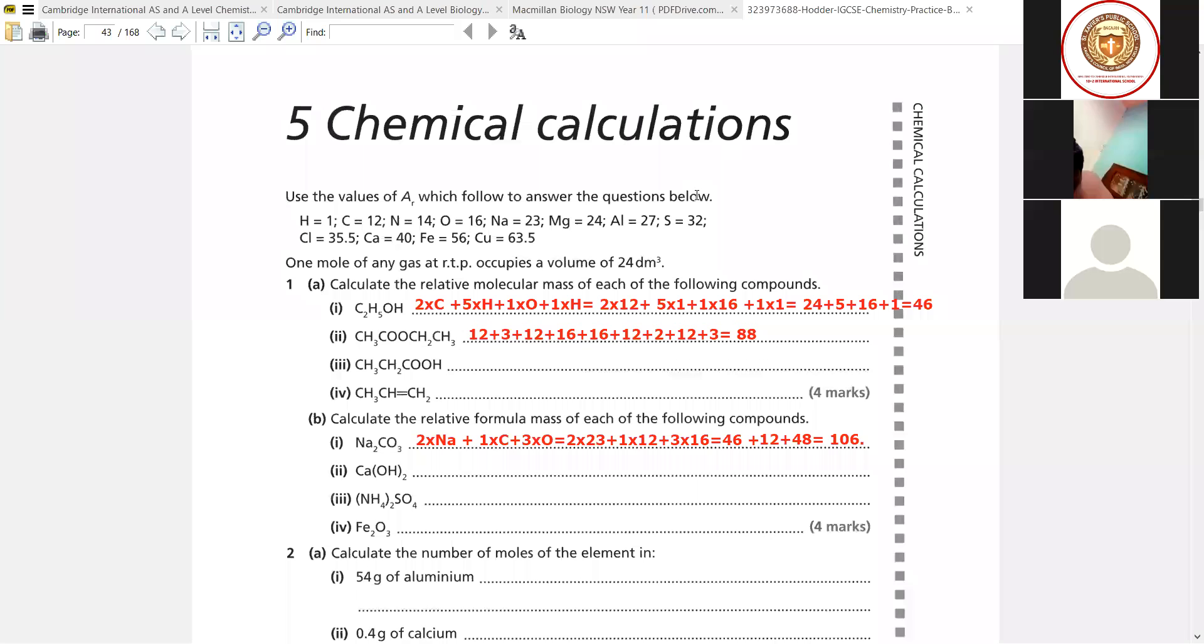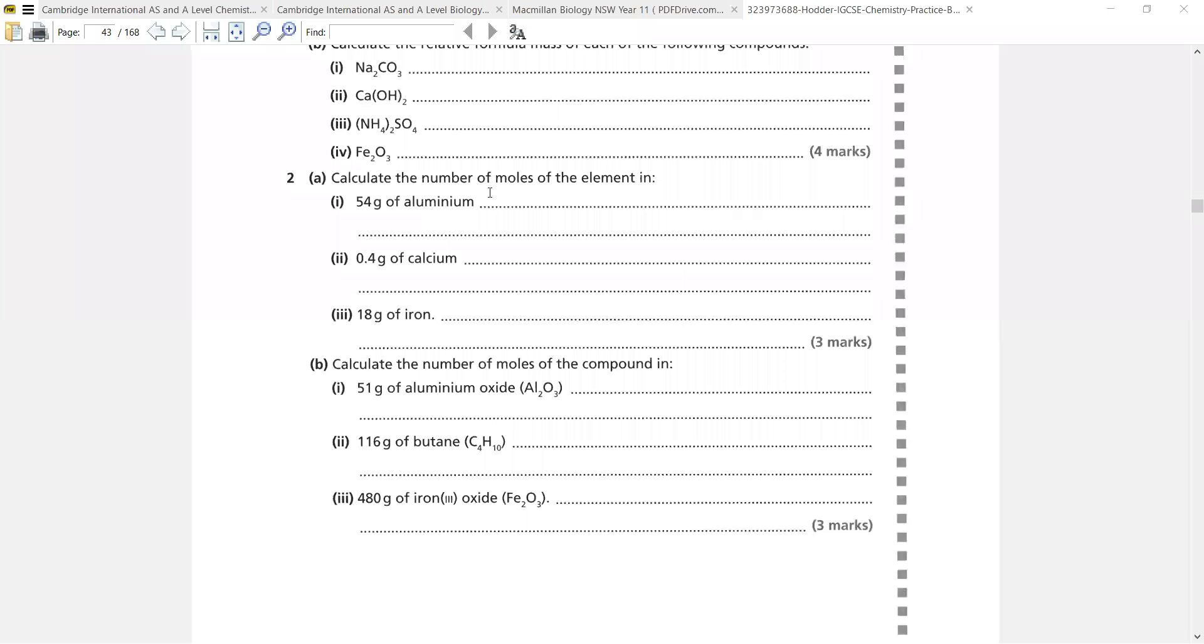Continue with other sums. What they are saying is calculate the number of moles of the element in 54 grams of aluminium. In this type of problem, what you really need to do is first of all write the atomic mass. So RAM of aluminium equals to 27. Thus, number of moles equals to...